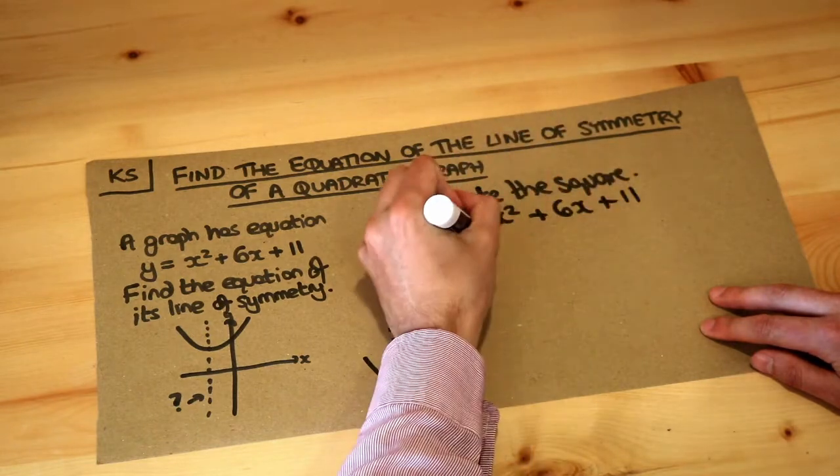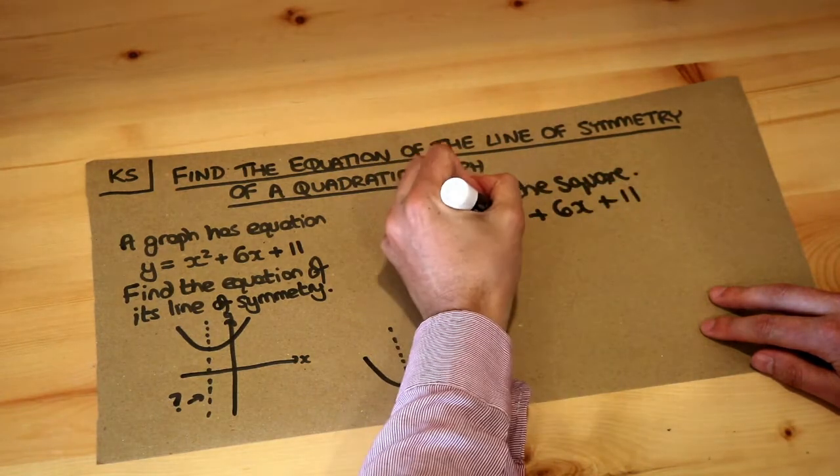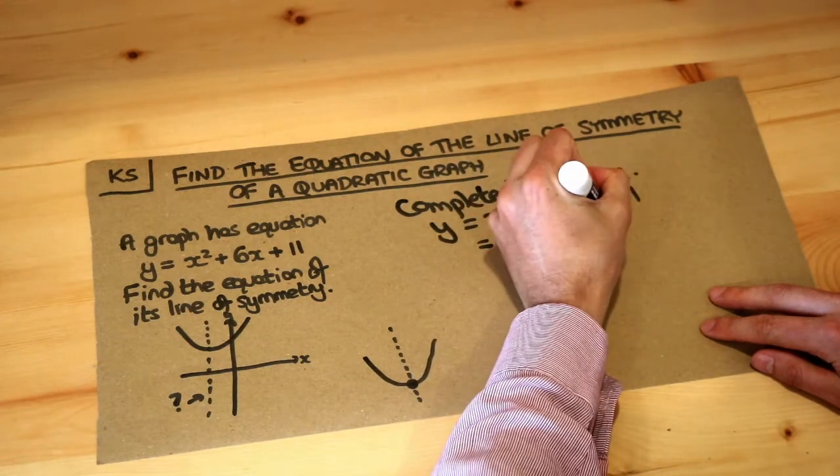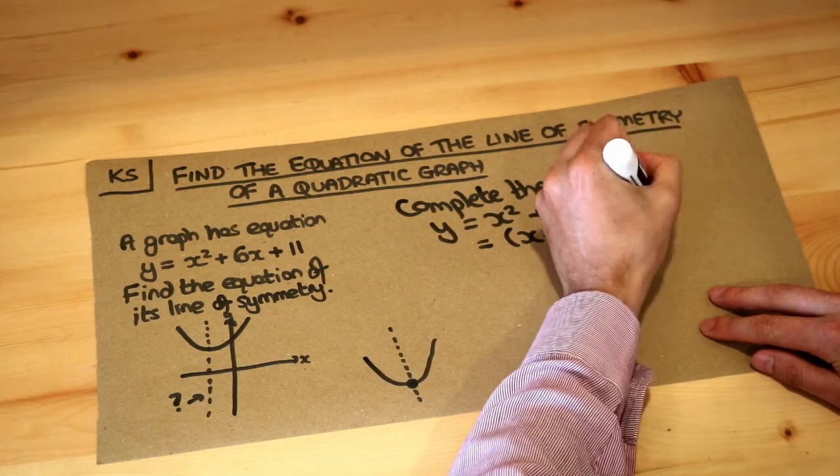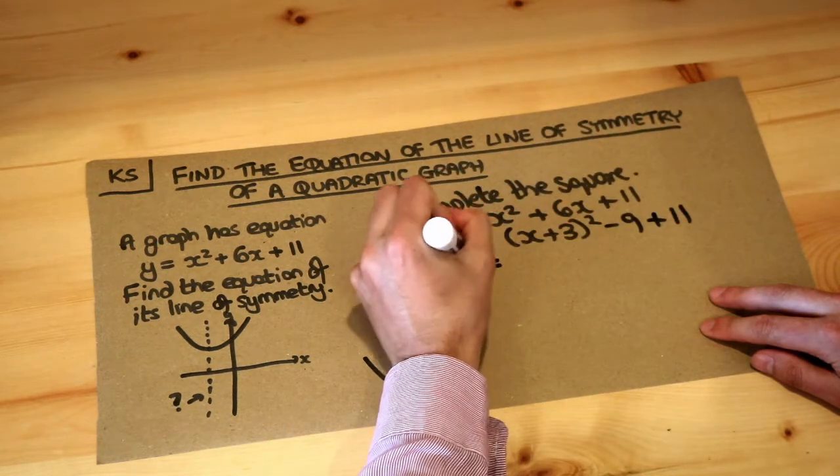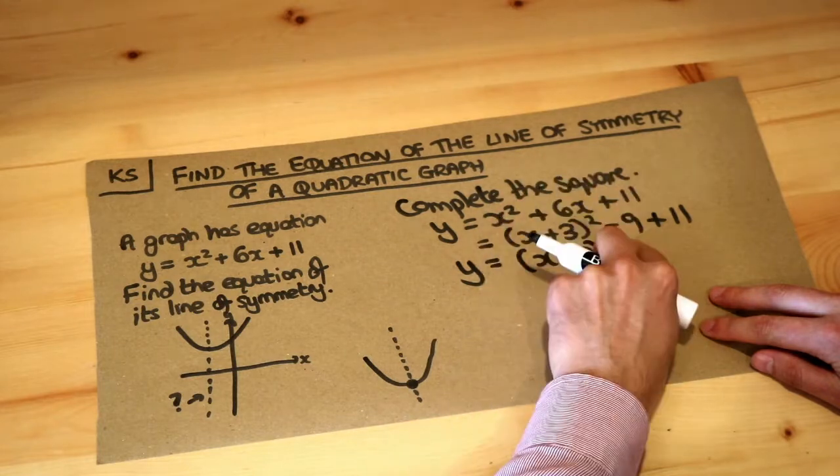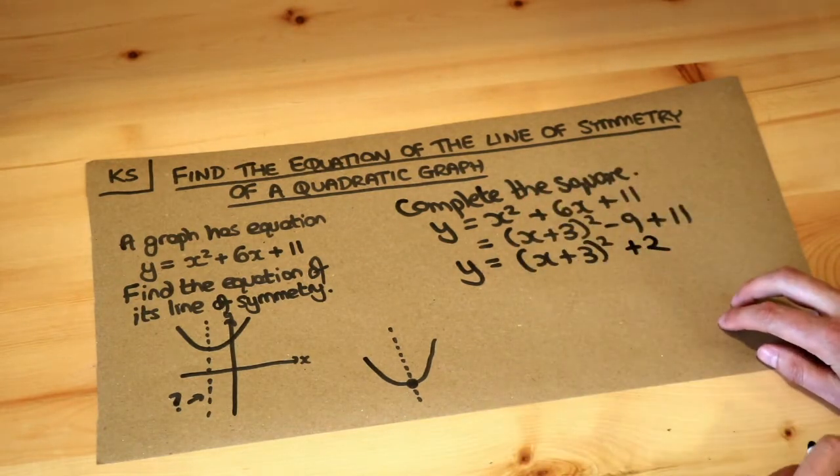remember we halve the number in front of the x, so it would be x plus 3 squared. We take that number and subtract it, so minus 9, and we've still got that plus 11, and then we tidy up at the end. So x plus 3 squared, minus 9 plus 11 is plus 2. So that's the completed square.